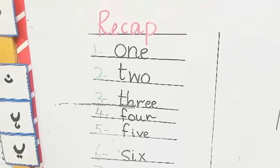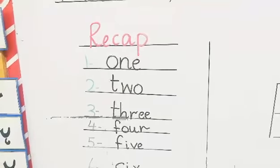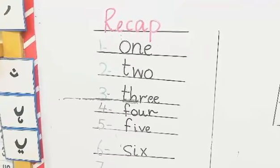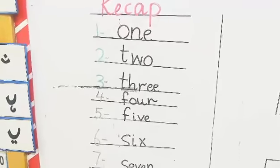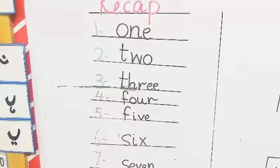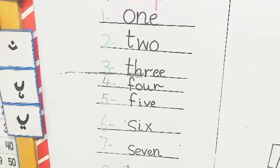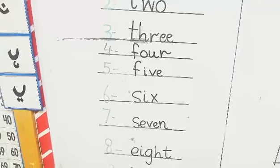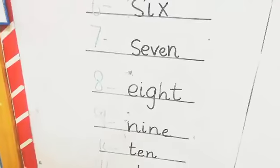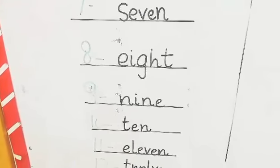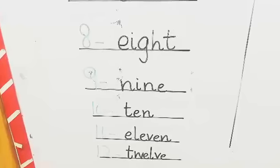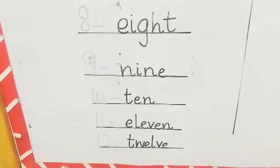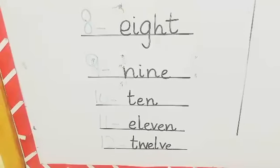O-N-E, 1. T-W-O, 2. T-H-R-E-E, 3. F-O-U-R, 4. F-I-V-E, 5. S-I-X, 6. S-E-V-E-N, 7. E-I-G-H-T, 8. N-I-N-E, 9. T-E-N, 10. E-L-E-V-E-N, 11. T-W-E-L-V-E, 12.